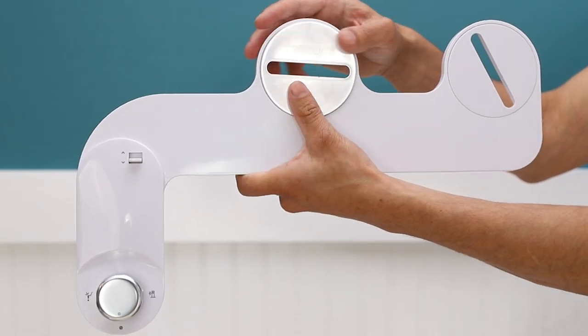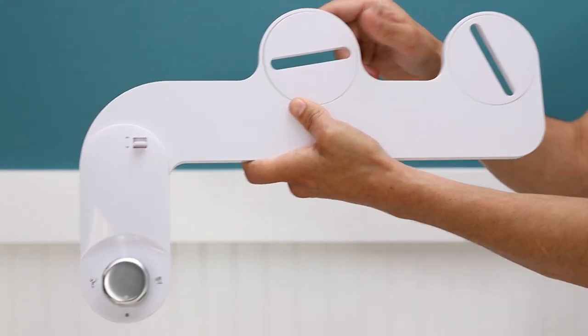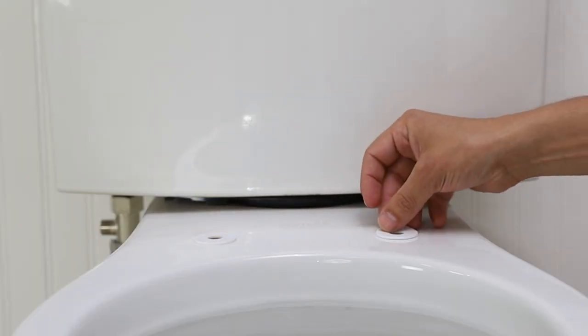Place circular mounting brackets into the circular openings of the bidet attachment. Add large white mounting washers if needed for a better fit.